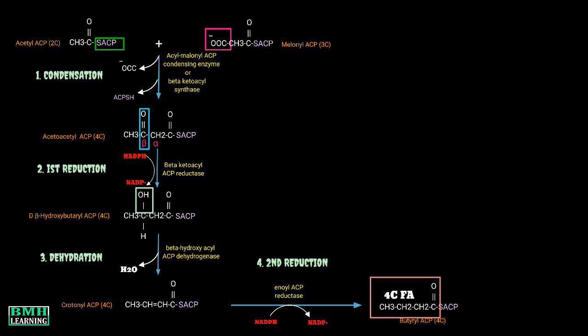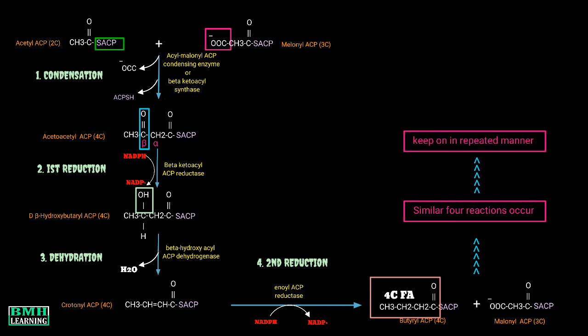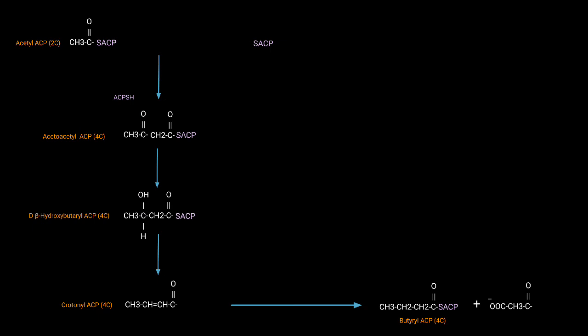And this one is going to be attached to the next molecule of three-carbon malonyl-ACP. Then in a similar fashion, the same four reactions would occur, and this would go on in a repeated manner and will continue until the 16-carbon compound palmitate is formed. This was all. Thanks for watching.